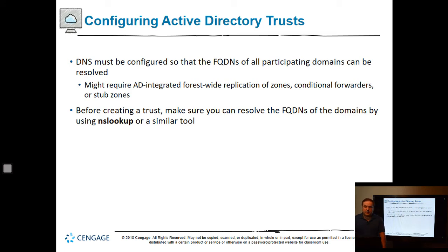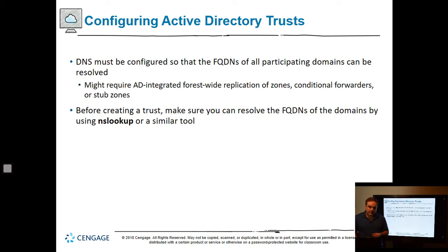DNS must be configured so that the fully qualified domain names of all participating domains can be resolved. When you create these linkages between forests and domains, you've got to replicate the DNS zones as well — otherwise you're not going to be able to find each other, and you'll need to manually add replication for those DNS zones. Before creating a trust, make sure you can resolve the FQDNs using nslookup or a similar tool, or just ping the server — if you can reach it, your DNS is set up right.